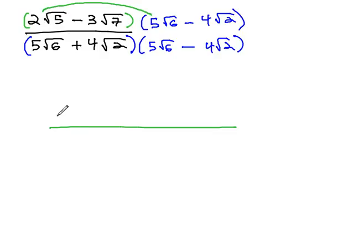2 root 5 times 5 root 6 is 10 root 30, multiplying the outside numbers and the inside numbers, keeping them inside. 2 root 5 times negative 4 root 2 is negative 8, square root of 5 times 2 is 10.